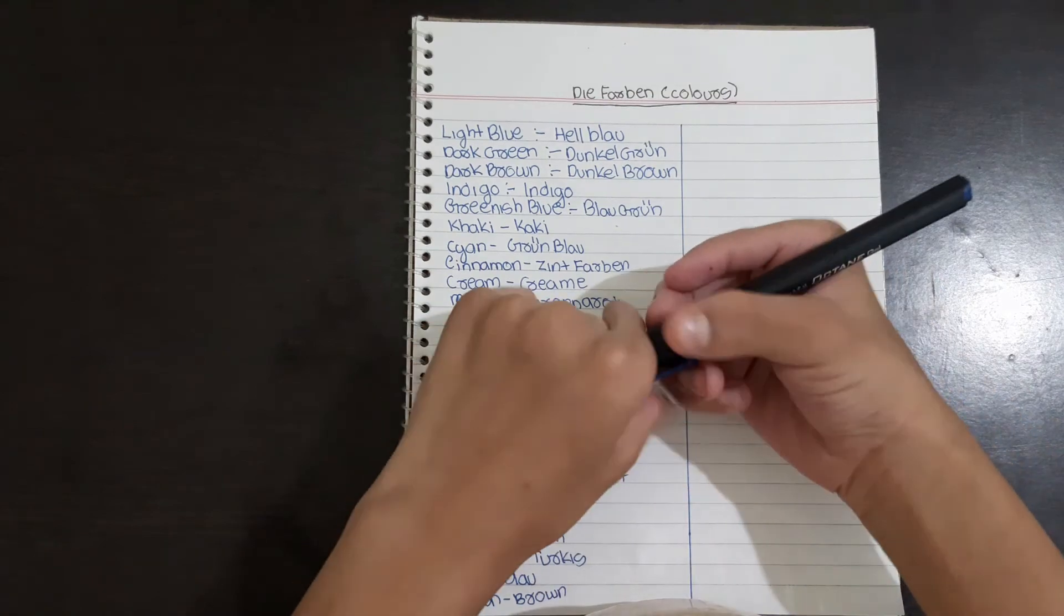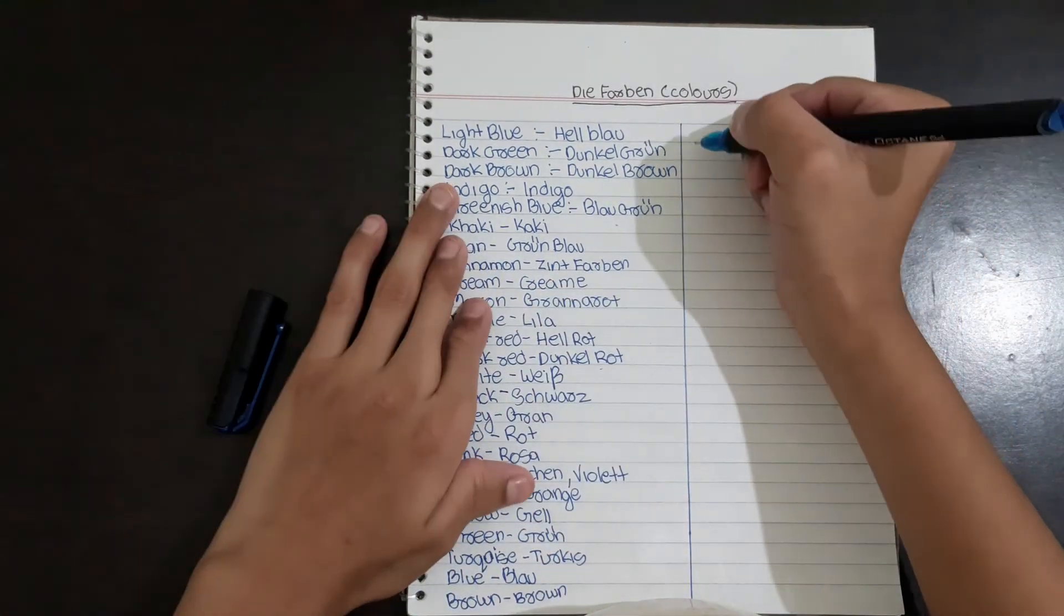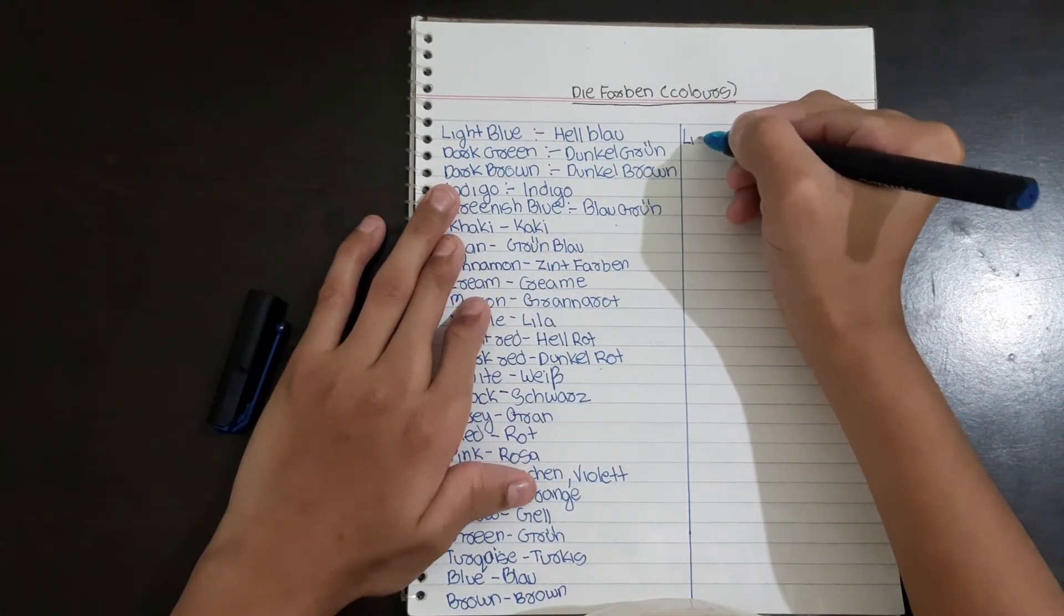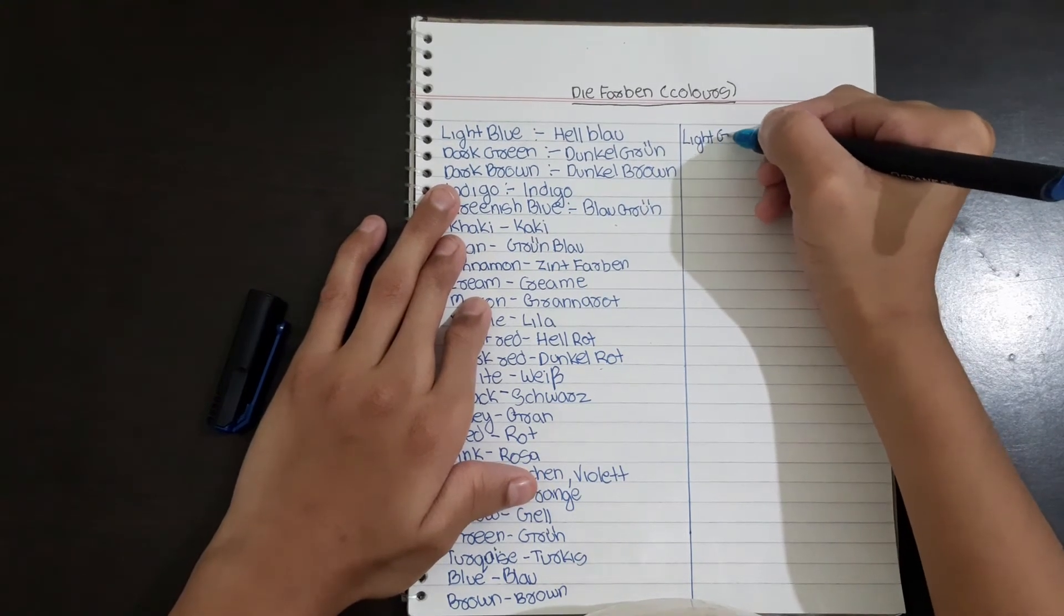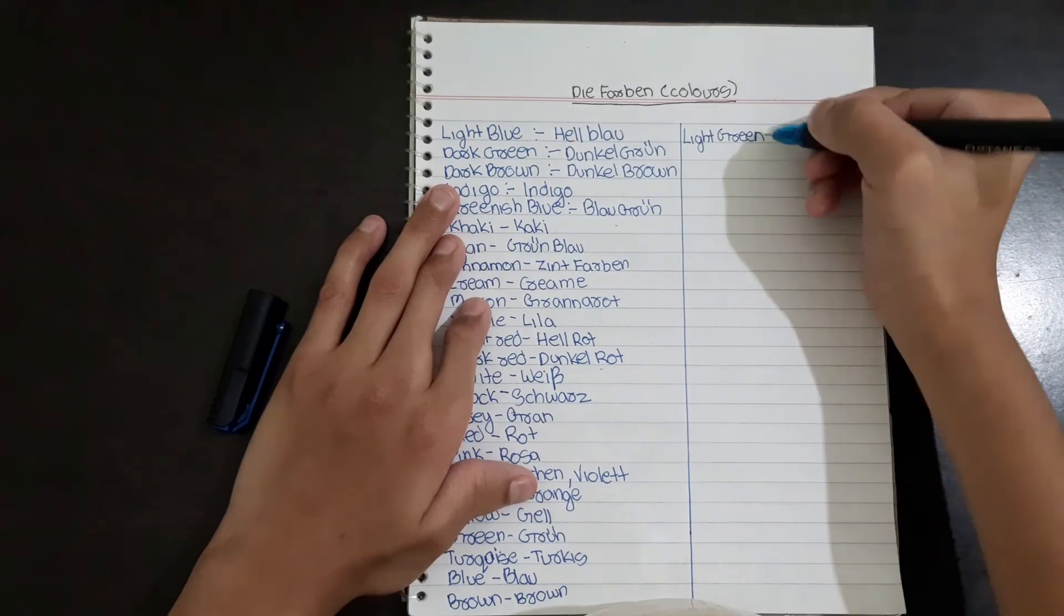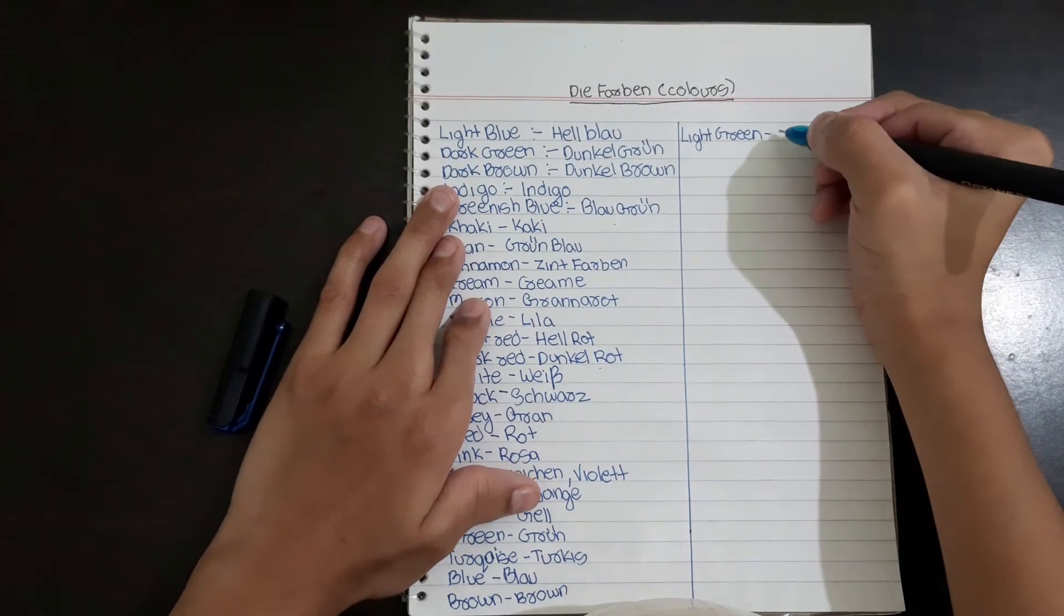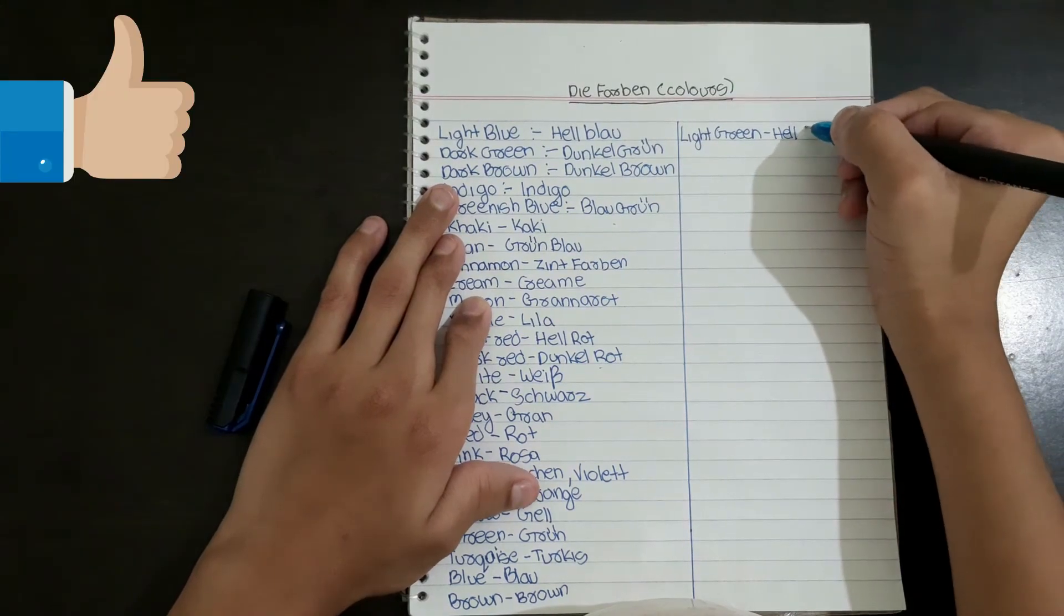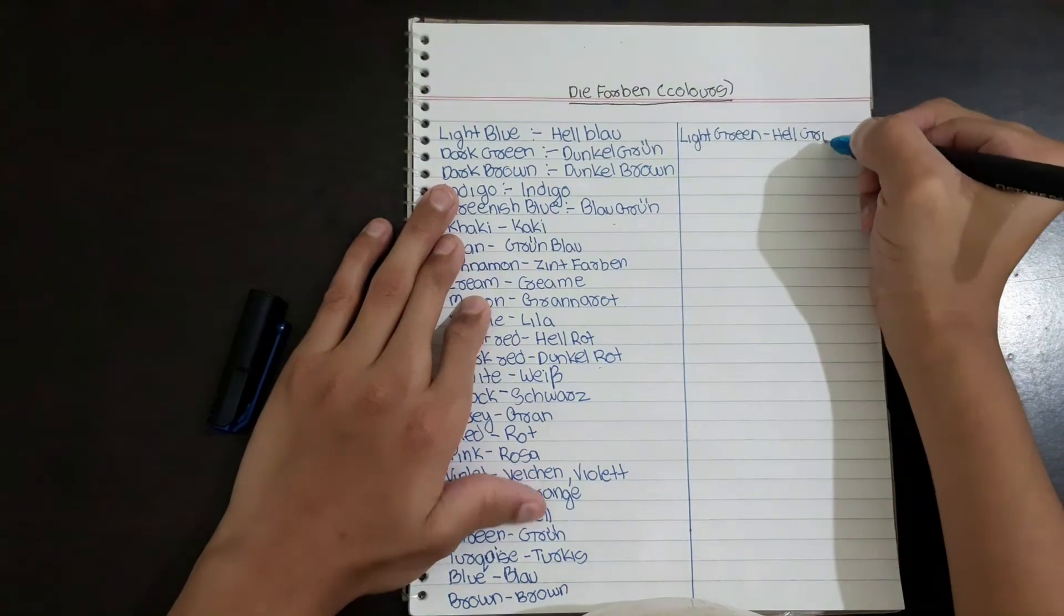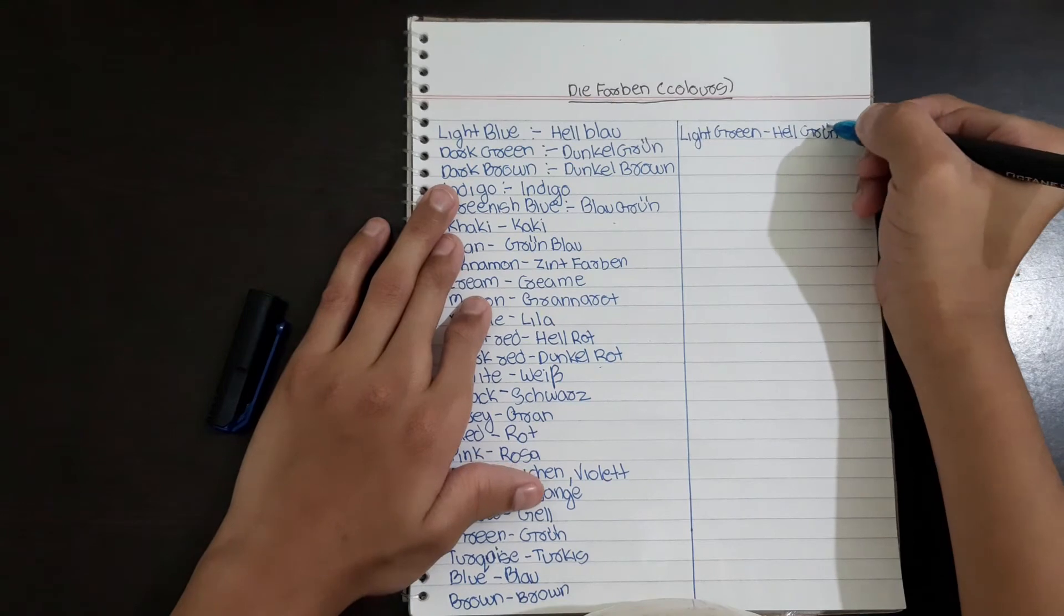Now light green means Hellgrün. Hell means light, Grün means green.